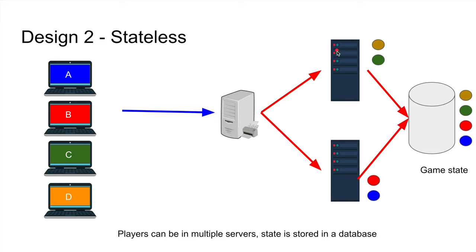Player B joins and hits a different server — that's fine, you're load-balancing across servers now, even within a single game. In the stateful design you load-balance between games, but within one game all players must hit the same server. Here, players in the same game can hit multiple servers, which scales better. Player C hits one server, player D hits another — all players have joined and the state is persisted in the database.